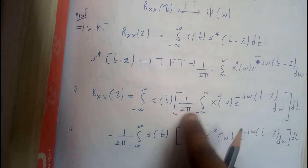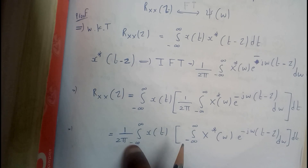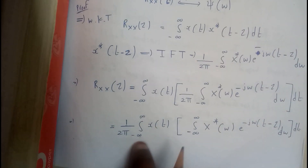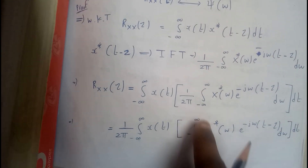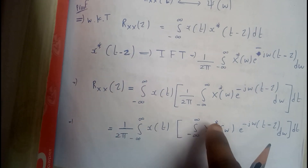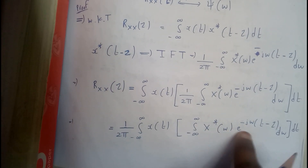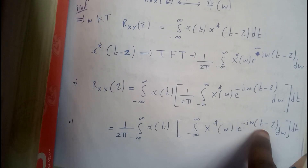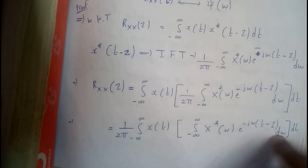Since 1 by 2pi is a constant we can push it out. So we have 1 by 2pi integral from minus infinity to infinity of X conjugate of omega into the integral from minus infinity to infinity of X(T) times e to the power of minus j omega (T minus Z), dT d omega.